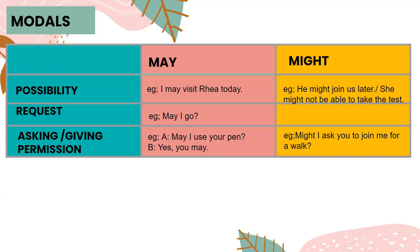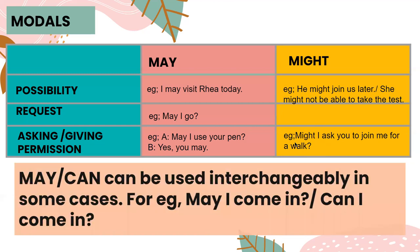We also use might to ask and give permission. For example: Might I ask you to join me for a walk? This is an archaic way of using might. More modern usage would be: May I ask you to join me or Would you join me for a walk? Saying might I ask you was common in European and British English. Remember, may and can are helping verbs which can be used interchangeably — may sounds more polite than can because can is informal.